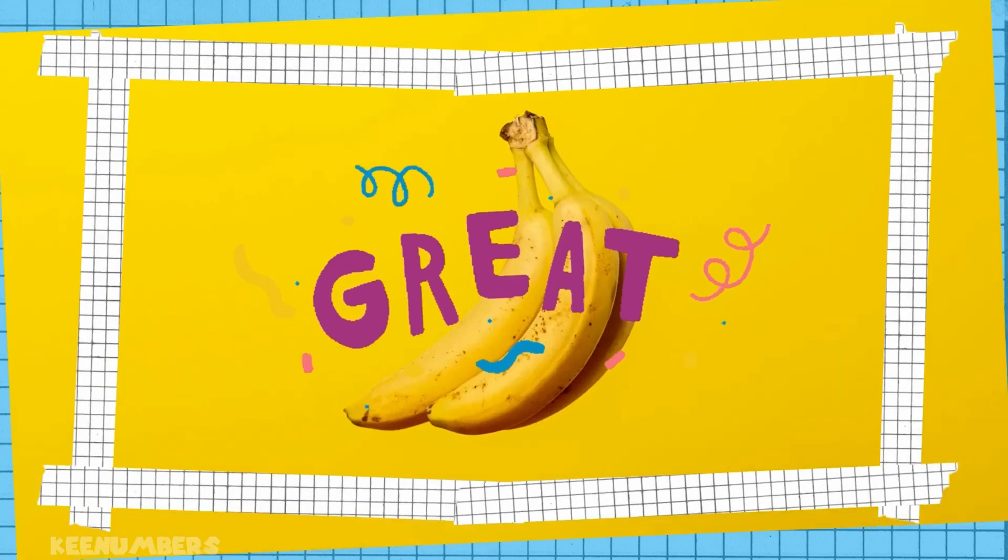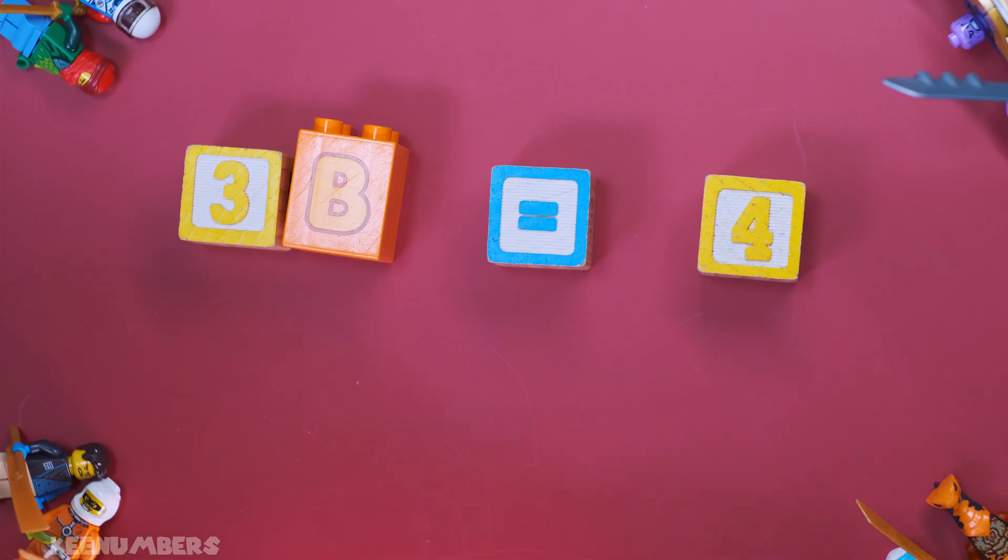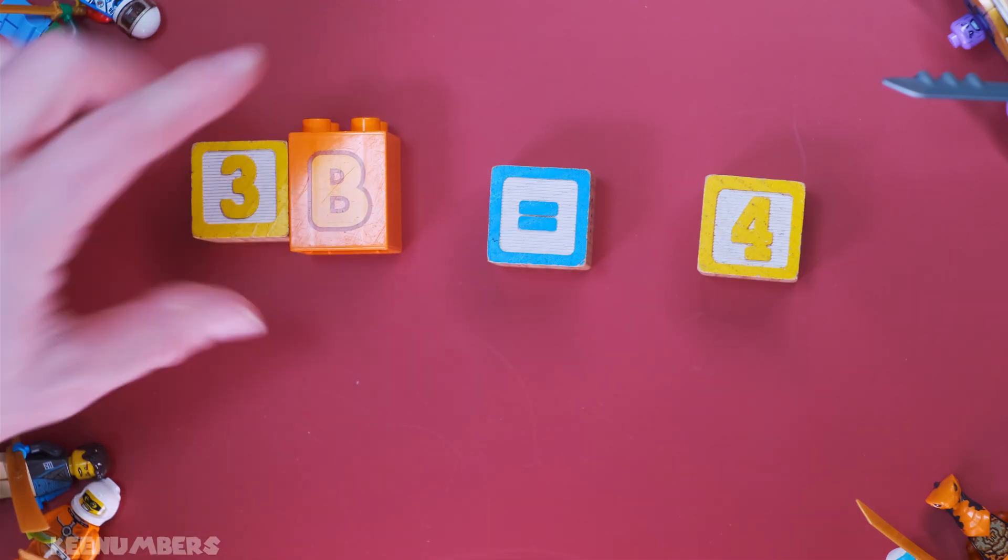3b equals banana. No, not banana. 4. Get out of here, banana. 3b equals 4.